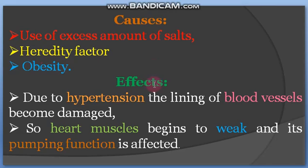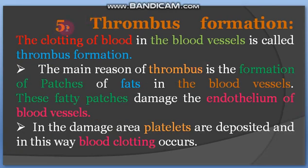Hypertension ke effects kya hote hain? Due to hypertension, the lining of blood vessels becomes damaged. The heart muscle begins to weaken and its pumping function is affected — blood flow becomes slower. Yeh effects hypertension mein hote hain.